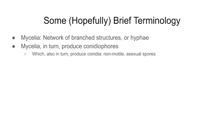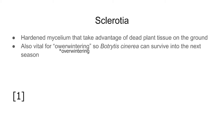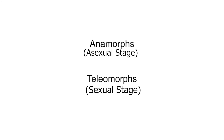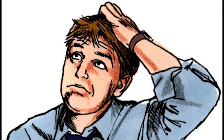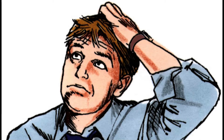Under more adverse conditions like winter, sclerotia are more prevalent — hardened mycelium that take advantage of dead plant tissue on the ground and are vital for overwintering into the next season. Many microscopic fungi have asexual and sexual stages, termed anamorphs and teleomorphs. It's a confusing subject, but it needs to be mentioned because the naming convention has changed over the last ten years.